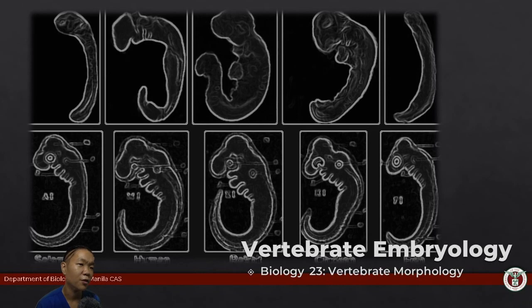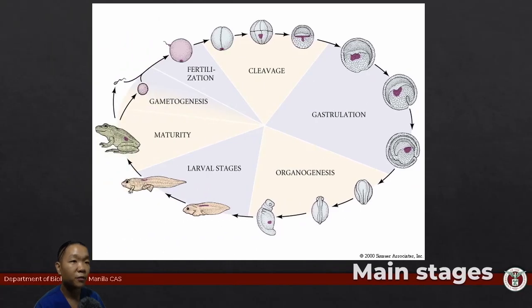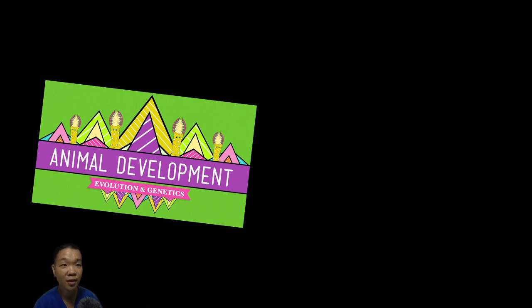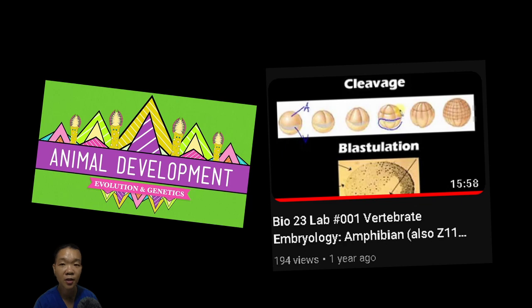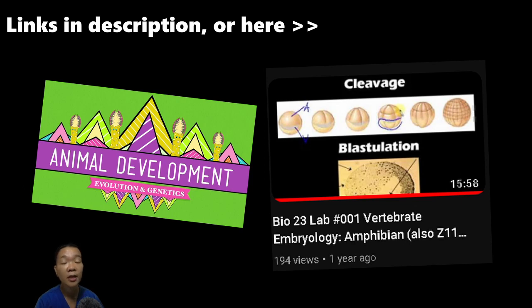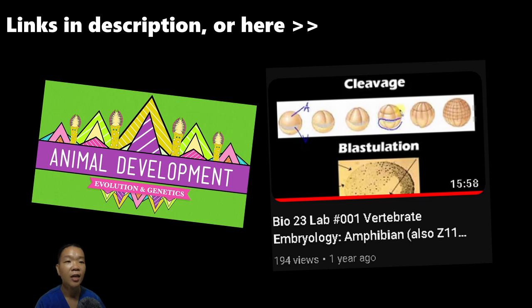Considering how diverse vertebrate morphology is, the development, or ontogeny, of anatomical structures can therefore give us clues to our shared ancestry. Vertebrate development encompasses several key stages. Crash Course made an excellent overview on the process, plus a separate video specifically on amphibian ontogeny has already been made, so please watch those because there's no use repeating what has been done or said.